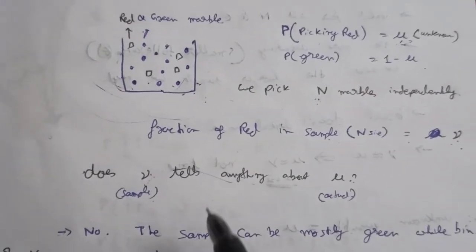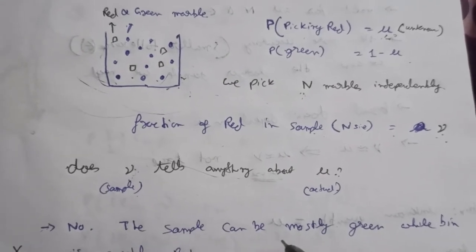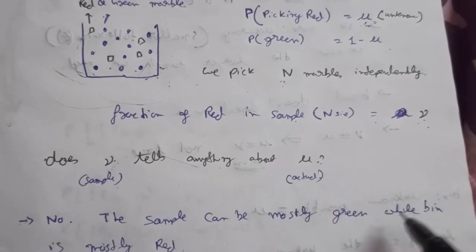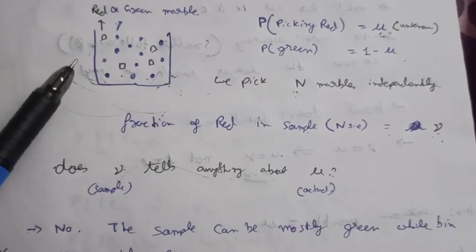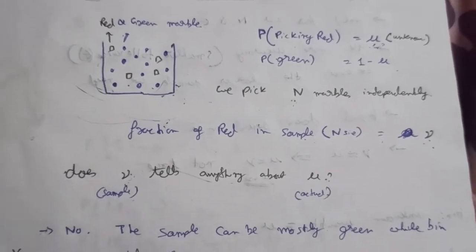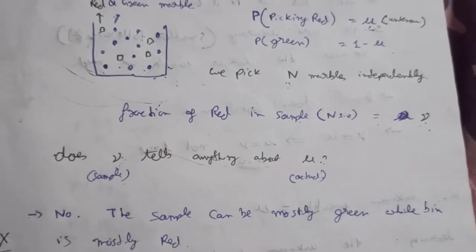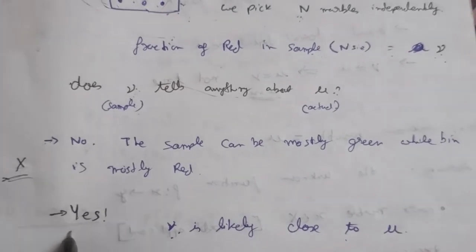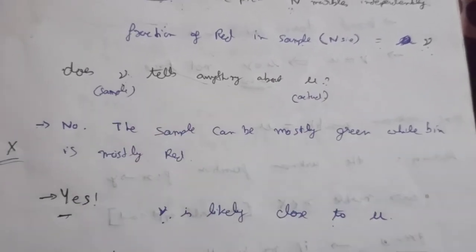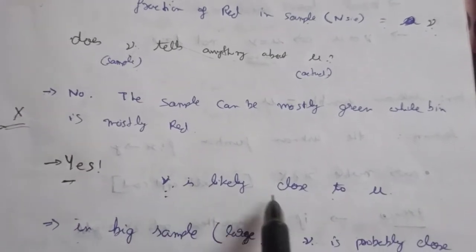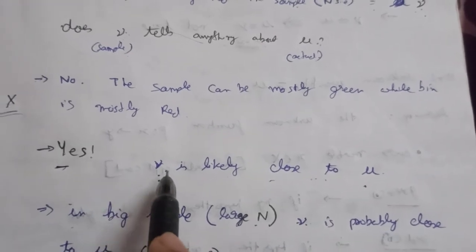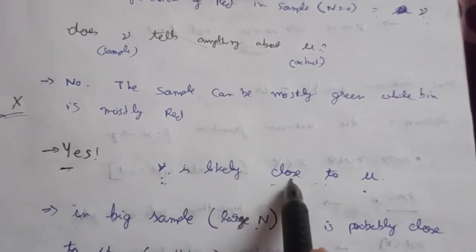Can nu tell us anything about mu? The answer is no — not necessarily. Obviously, the sample can be mostly green. Suppose the sample size is 10 and there are 9 green marbles and 1 red marble, but the actual bucket can be mostly red. However, in the larger view we can say that yes, we can tell the value of mu from nu. How? Because nu is likely to be close to mu.